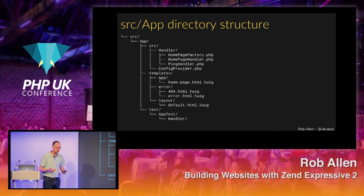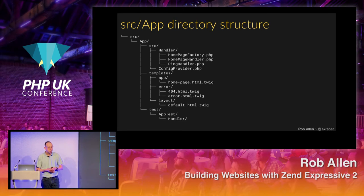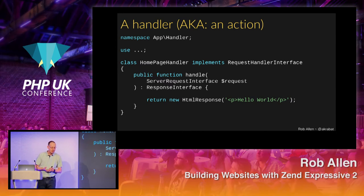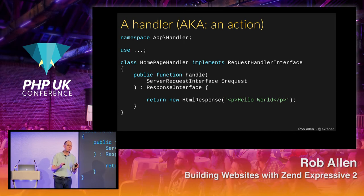Inside the source folder we've got a source and test folder again. Handlers — the word we now use for actions — include a HomepageHandler and a PingHandler. Templates is where our HTML code goes; in this example I've chosen Twig, which is why we've got a Twig extension. Handlers look like this: the other half of PSR-15 is the request handler interface, which has a method called handle that takes a request and must return a response. This is your action.